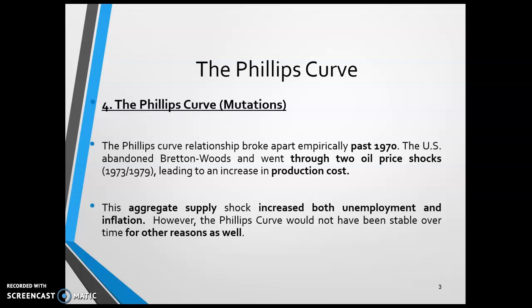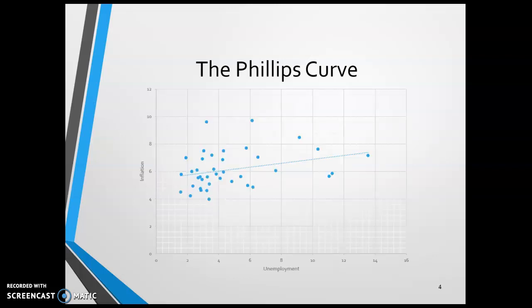But even if this aggregate supply shock hadn't occurred, a change in monetary policy—this increase in the money supply—kept shifting up inflation consistently. And that too broke the original Phillips Curve for reasons we'll discuss now. First things first, let me show you the data.